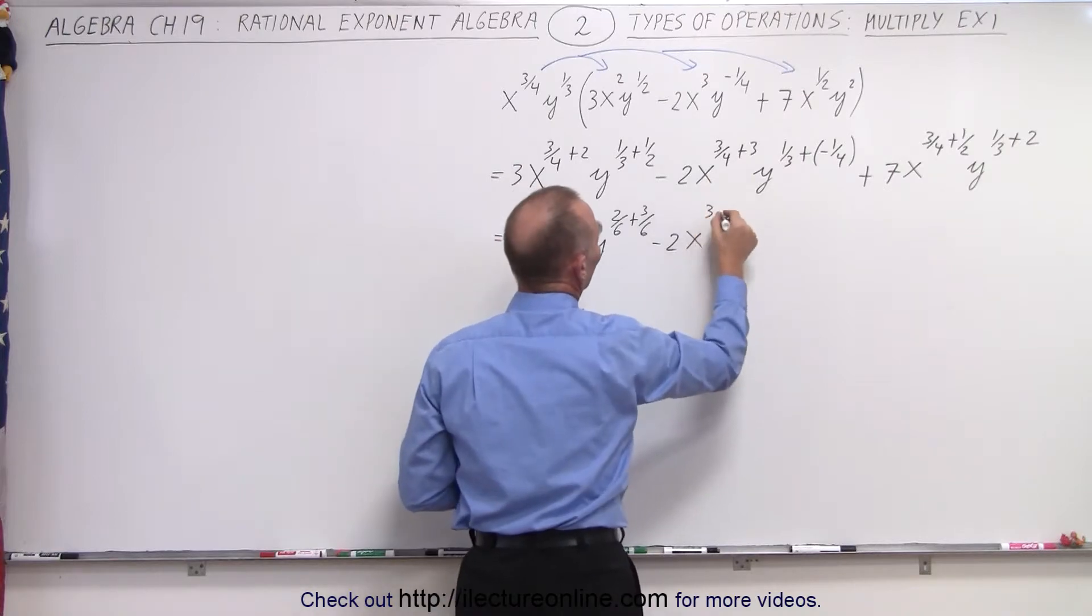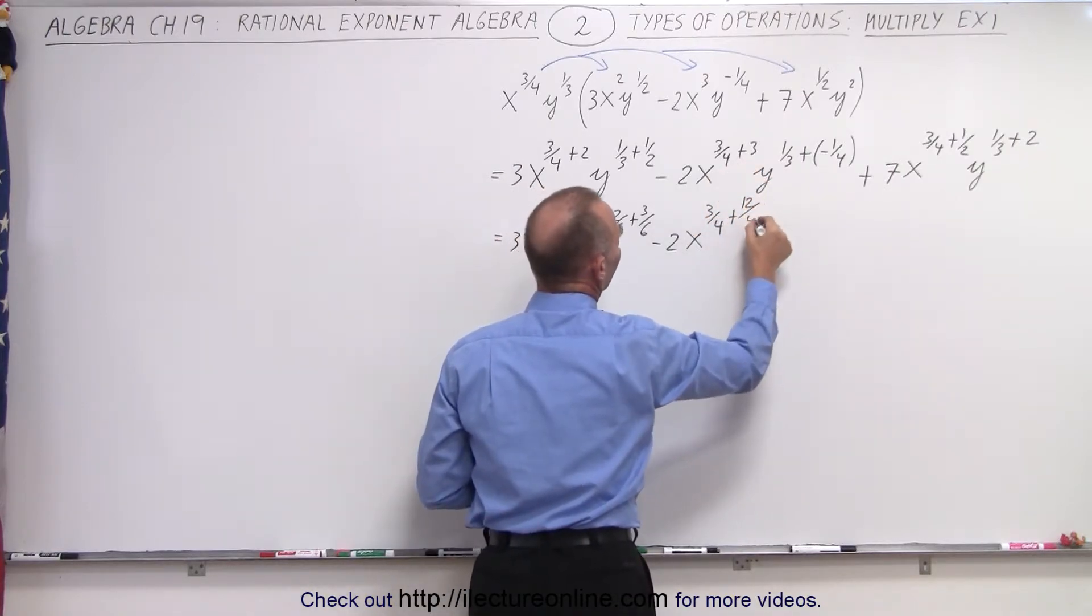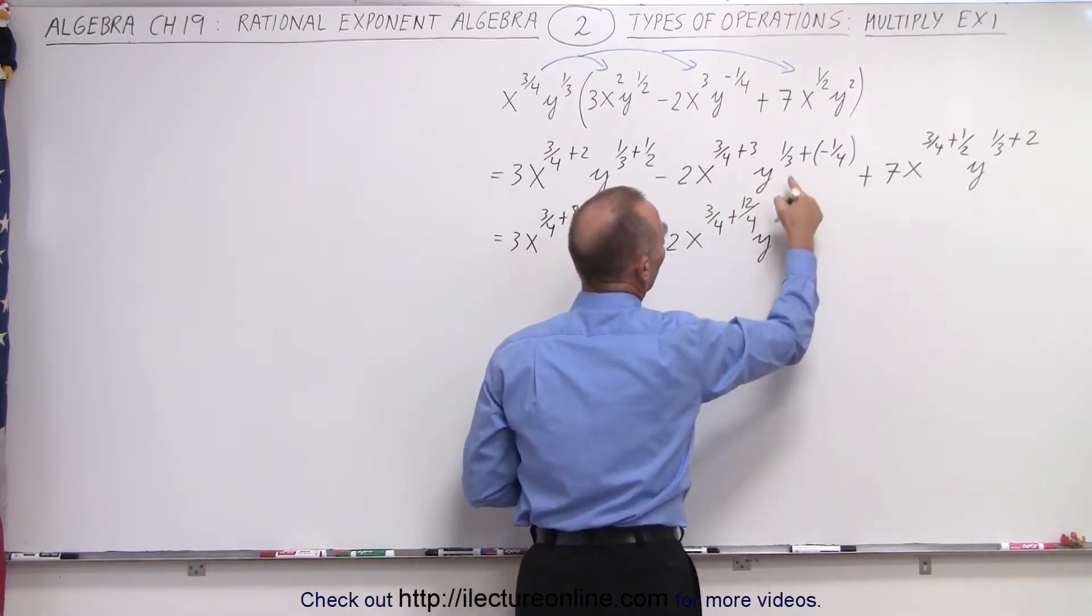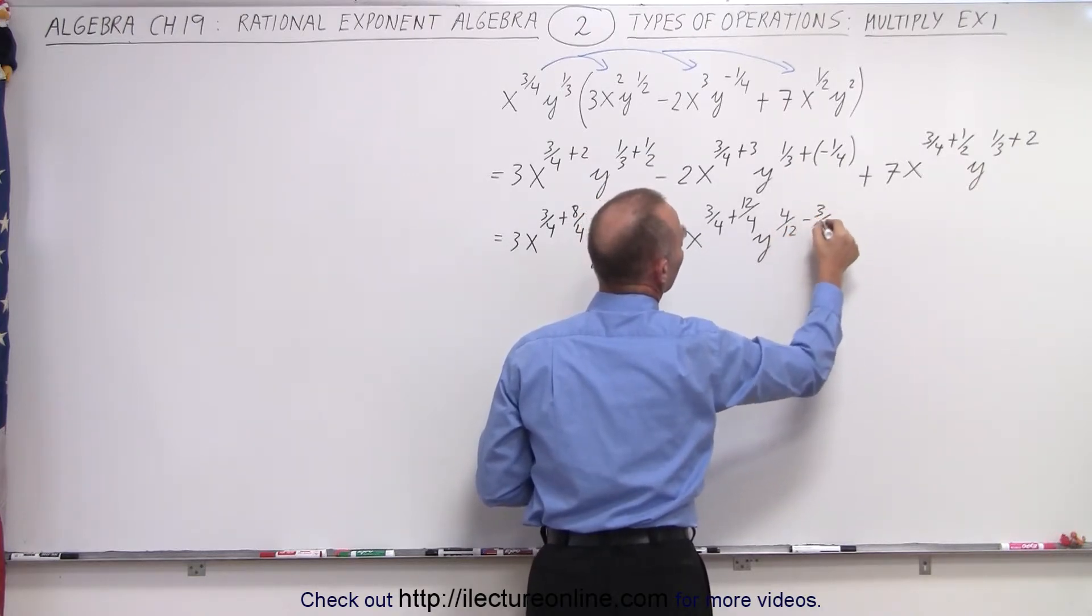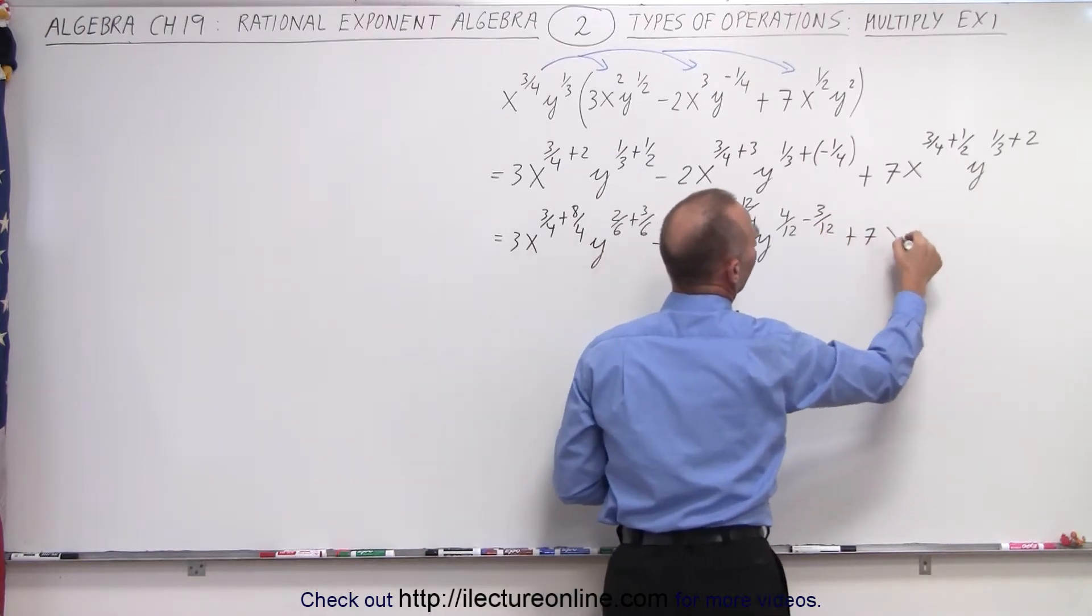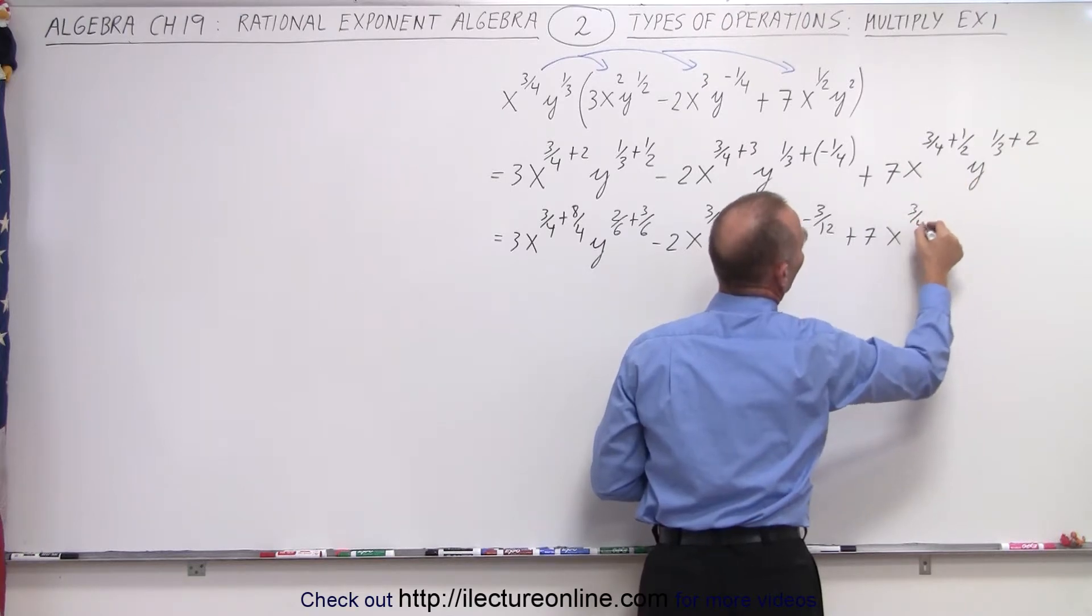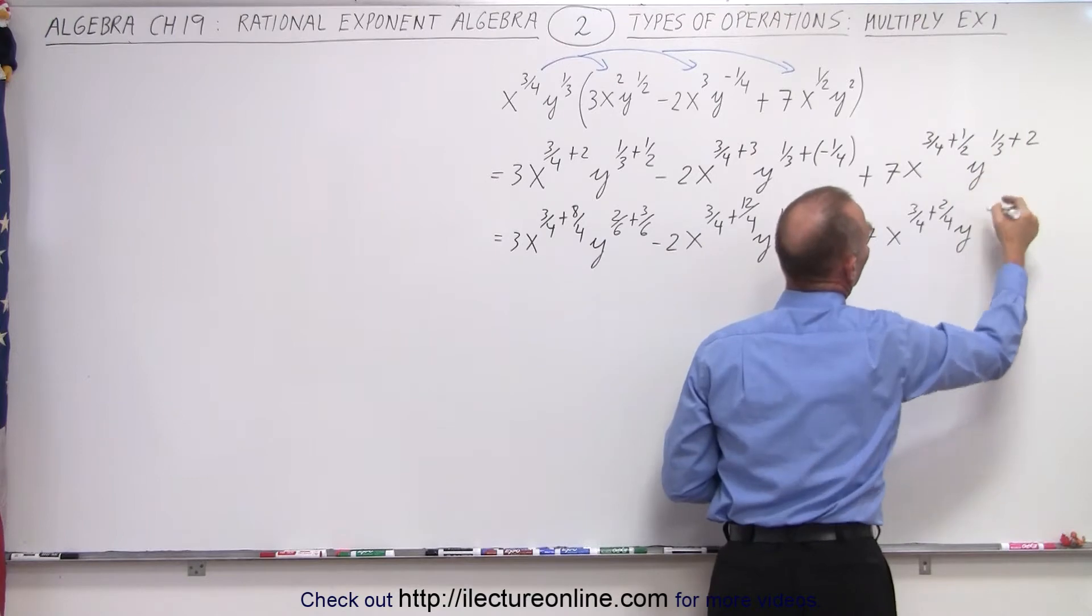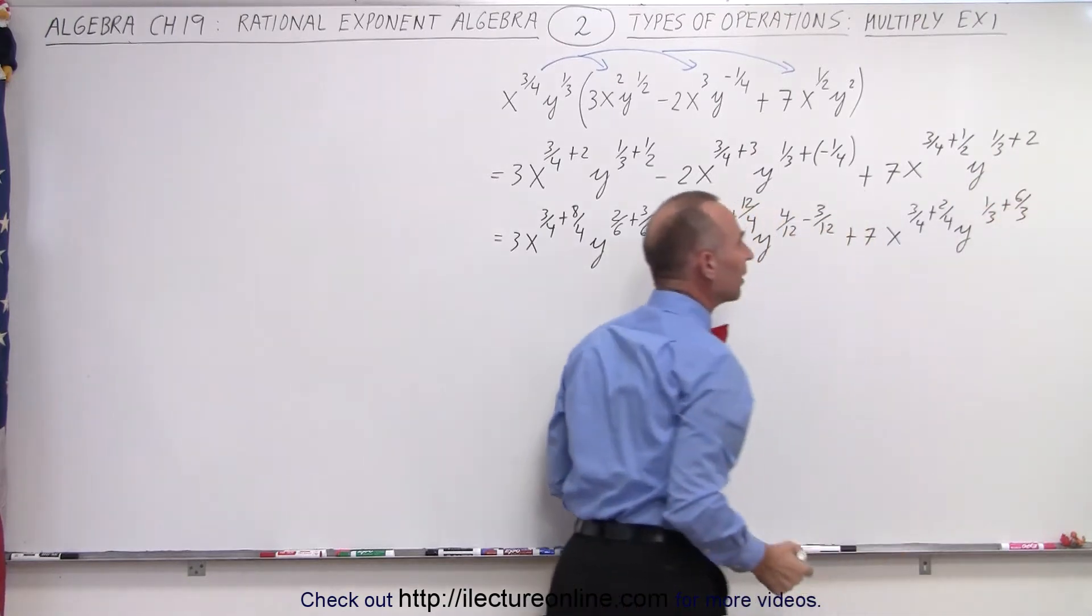Minus two x. Here again, we write over three over four, and that would be plus twelve over four, because if I take twelve divided by four, I get three again. And here we get y. Here the common denominator would be twelve, that would be four twelfths minus three twelfths plus seven times x. The common denominator here is four, so it would be three fourths plus two fourths and y. The common denominator here is three, one third plus six thirds, because six divided by three gives you two again.